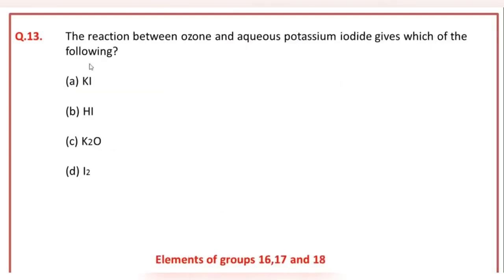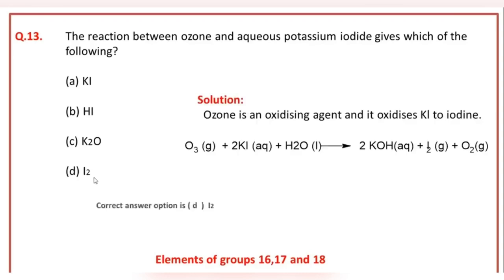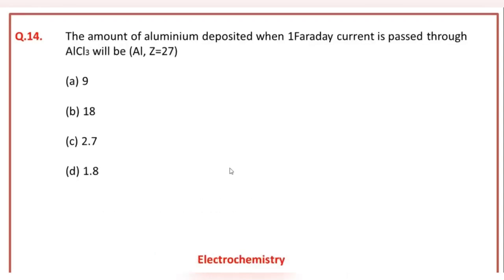The reaction between ozone and aqueous potassium iodide gives which of the following? The correct answer option is D, that is iodine.